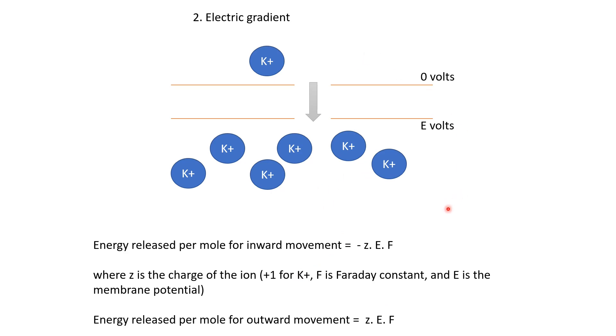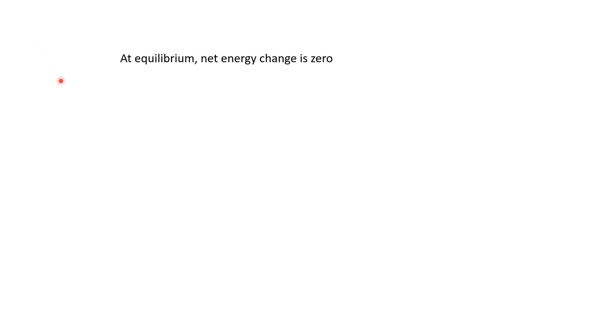We now have the terms for energy released per mole of potassium ions moving out according to the electrical gradient, and also according to the concentration gradient. Equilibrium is reached when the total energy released by both gradients is zero. If the energy released by the chemical gradient is positive and the energy released by the electrical gradient is negative, and they are equal in magnitude and cancel out, then there is no net driving force on the potassium ions. We write: zEF + RT ln(Ki/Ko) = 0.